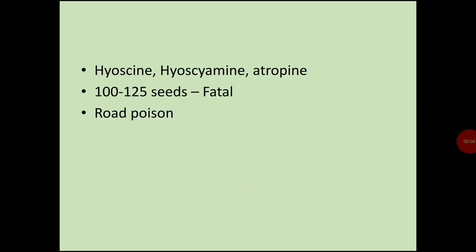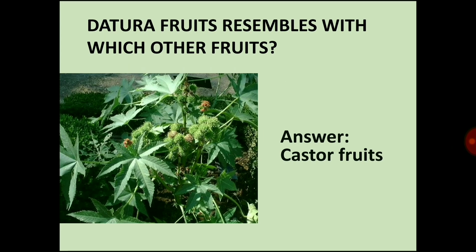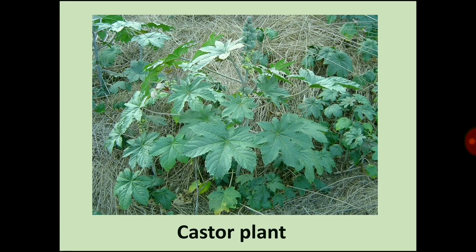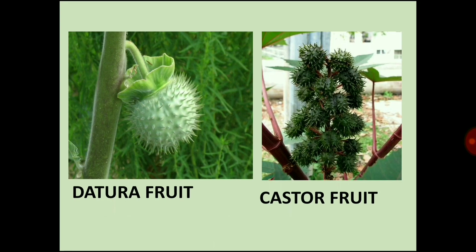Datura contains hyoscine, hyoscyamine, and atropine. It has 100 to 125 seeds. It is fatal and is a road poison. Datura fruit resembles which other fruit? The answer is castor fruit. You can see castor plants in this picture, which resemble Datura fruit. You can see the difference between Datura poison and castor poison.